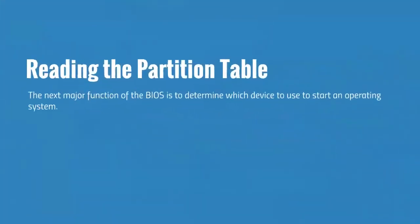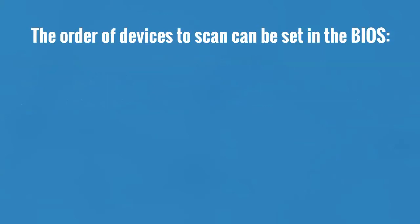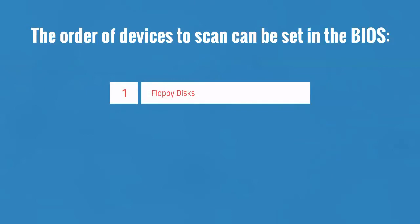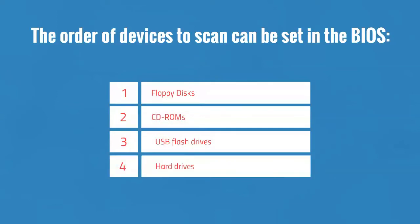The fourth phase is reading the partition table. The next major function of the BIOS is to determine which device to use to start an operating system. A typical BIOS can read boot information from several devices and will boot from the first device that provides a successful response. The order of devices to scan can be set in the BIOS: floppy disks, CD-ROMs, USB flash drives, hard drives, and network.